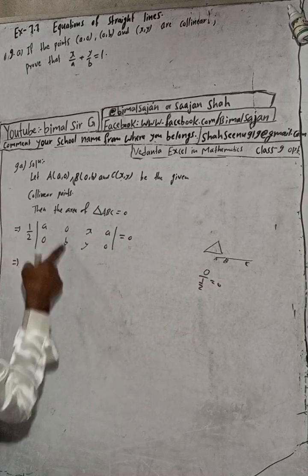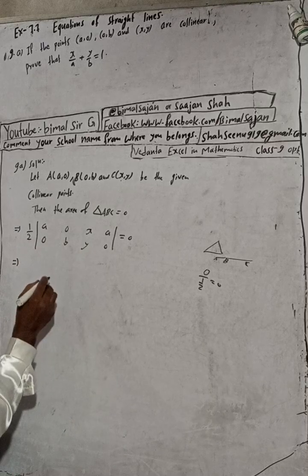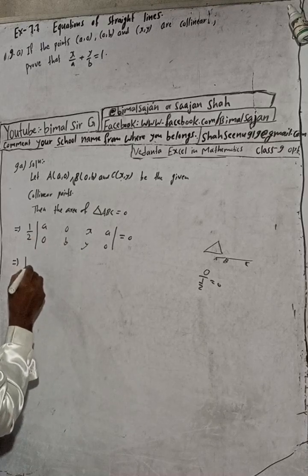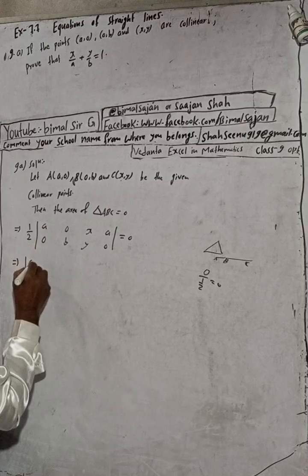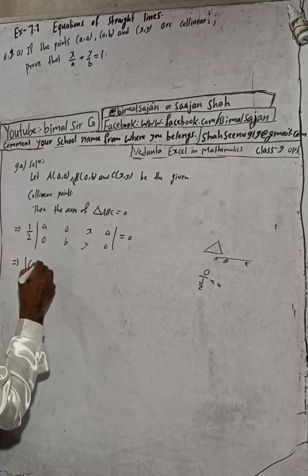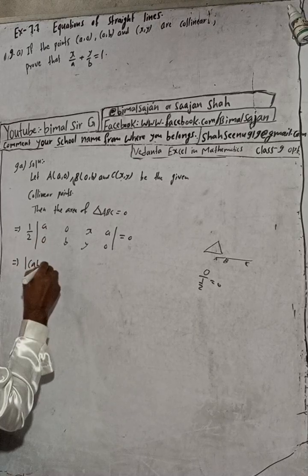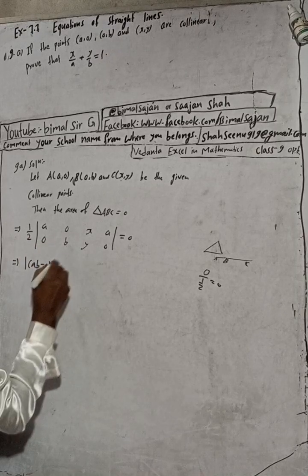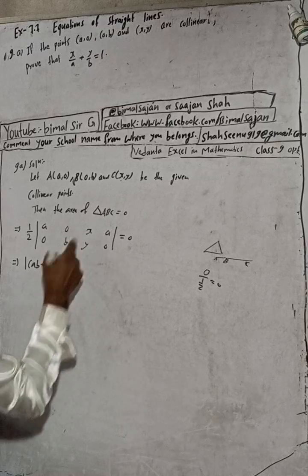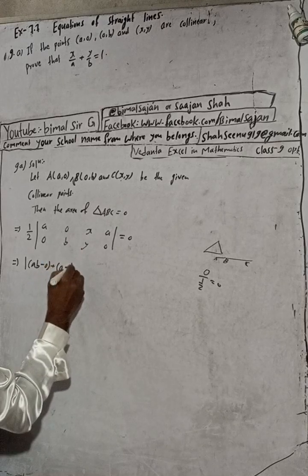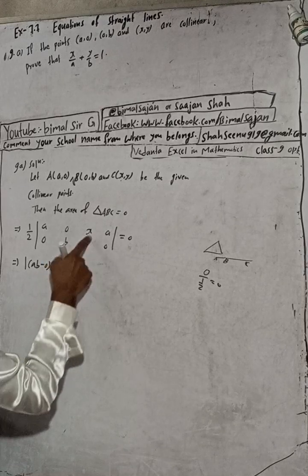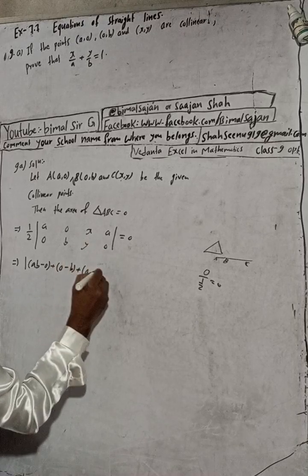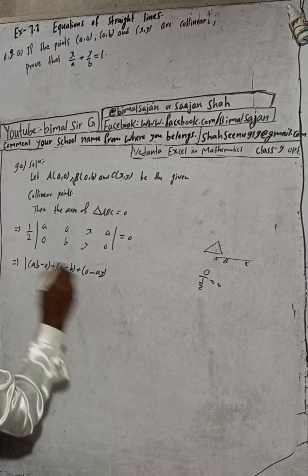Expanding the area formula: a times (b minus 0) gives a·b, plus 0 times (y minus 0) gives zero, minus b times x gives minus bx, plus x times 0 gives zero, minus a·y gives minus ay.